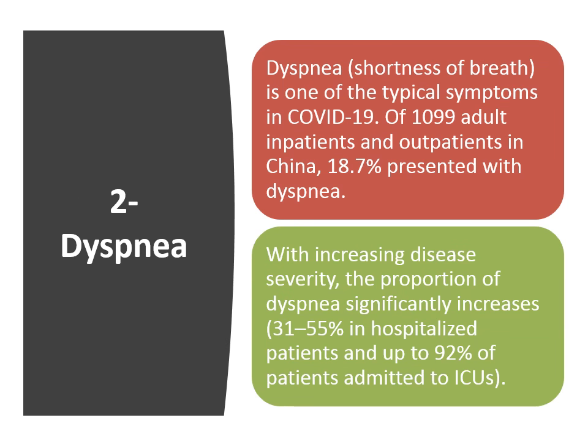The second clinical presentation is dyspnea. Dyspnea is one of the typical symptoms in COVID-19. Of more than 1,000 adult inpatients and outpatients in China, about 19% presented with dyspnea. With increasing disease severity, the proportion of dyspnea significantly increases, up to 55% in hospitalized patients and up to 92% of patients admitted to the ICU.